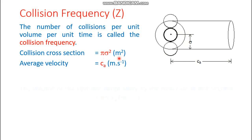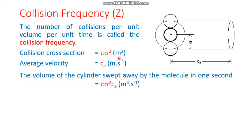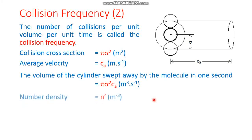The average velocity is CA in meters per second. The volume of the cylinder swept away by the molecule in one second is π r² h, where r = sigma and h = CA. The unit is meter cubed per second (meter squared × meter per second). Therefore, the volume swept per second is π sigma² CA, in units of m³/s.